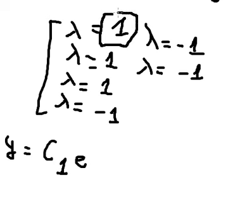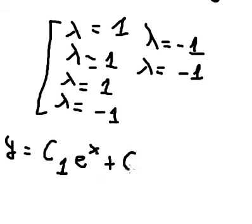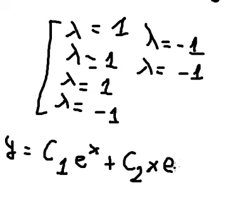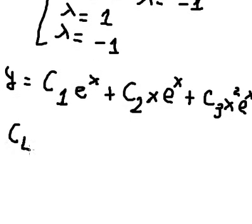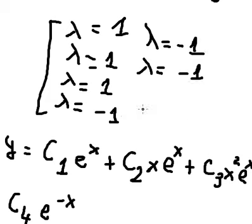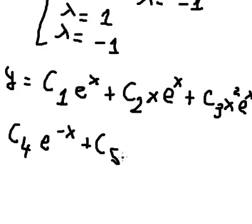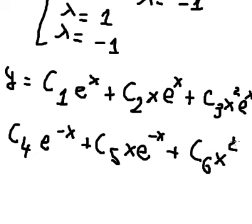Substituting the eigenvalues: lambda equals positive one, so we get c1 e to the power of s. Since lambda equals one is repeated, we also have c2 s e to the power of s and c3 s squared e to the power of s. For lambda equals negative one, we get c4 e to the power of negative s, and since negative one repeats, we also have c5 s e to the power of negative s. This is the final answer. Thank you for watching.